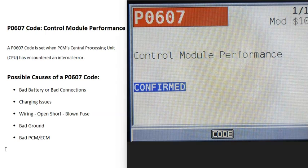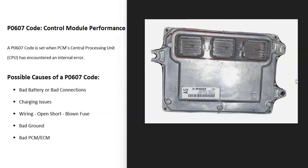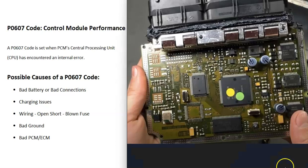Today I'm talking about a P0607 code — what it is and how you go about fixing it. The P0607 code is a control module performance code. Modern vehicles have computers built into them, and while there can be different control modules — like a transmission control module or an ABS control module — the main one is called the powertrain control module, or sometimes the ECM, the engine control module. For some reason this control module is having an issue; mainly the CPU built into it is having an internal error, so it's going to need troubleshooting.